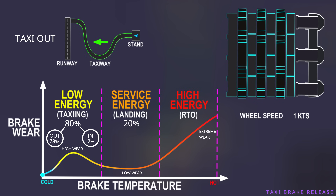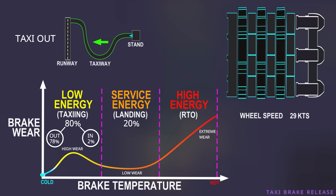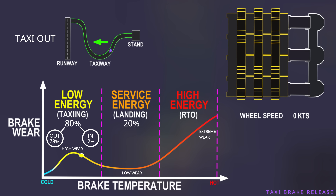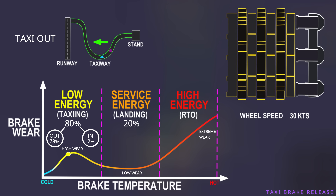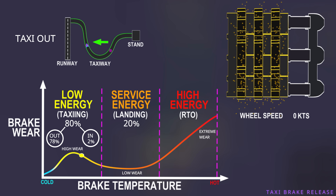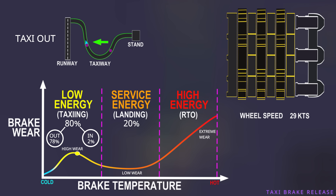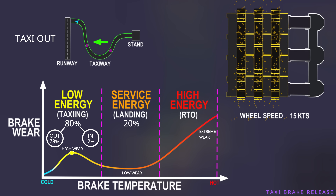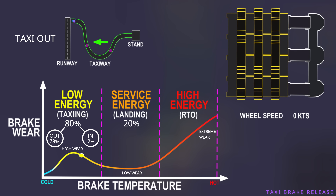During taxi-out, the aircraft starts and operates at a lower speed. Brake application during this phase does not reach the optimal temperature range, and brake wear increases. Additionally, the higher number of brake applications for turning and holding position maintains the brake in the high wear zone. Repeated brake application outside the optimal range increases the wear on the carbon brakes.